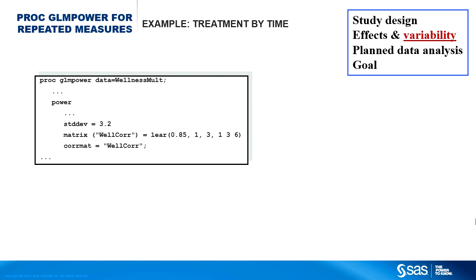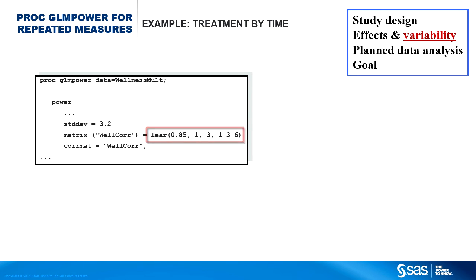Here are the PROC GLM POWER statements related to variability. In the POWER statement, use the STDDEV option to specify the standard deviation. Use the MATRIX option to define the LEAR correlation structure, and the CORMAT option to choose it for the power analysis. The parameters in the LEAR specification are: base correlation 0.85, correlation decay rate 1, number of time points 3, and time values 1, 3, and 6 months.